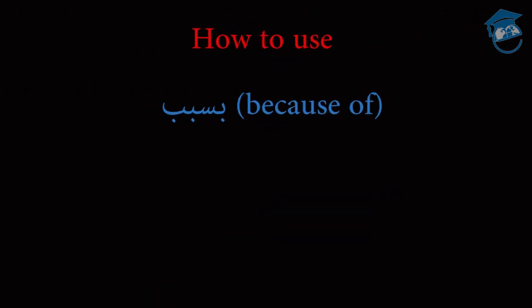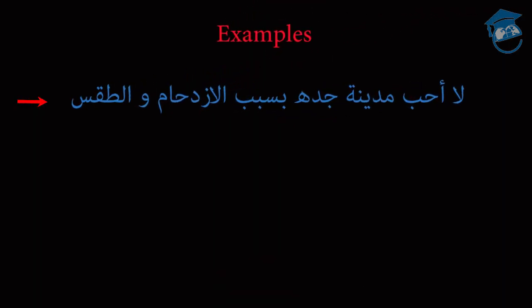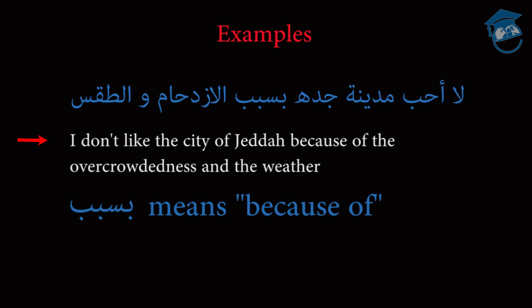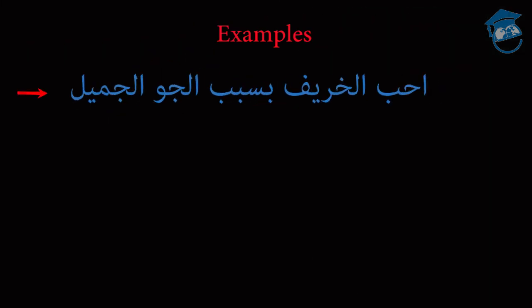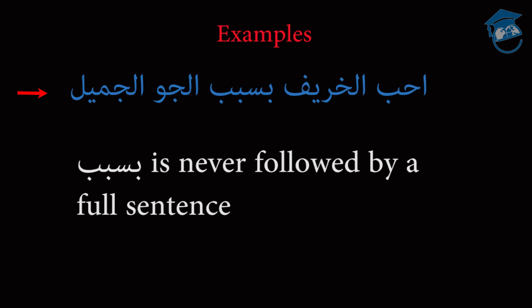Now let's look at how we use bisabab. Bisabab means because of, and it's used to give a one-word explanation. Bisabab is used with ism fi'idafa. For example: I don't like the city of Jiddah because of the overcrowdedness and the weather. I love the fall because of the beautiful weather. Remember that when you use bisabab, it is never followed by a full sentence.